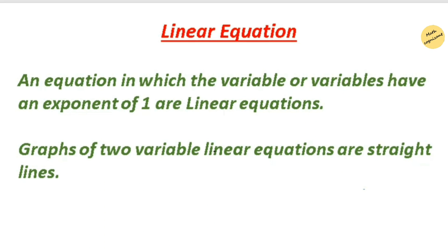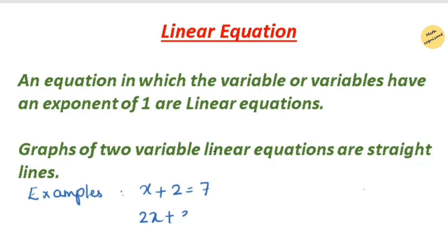Welcome to Math Cognizant. This video is a discussion about linear equations. A linear equation is one in which the variable or variables have an exponent of 1 — that means the degree should be 1. Such equations are called linear equations, and their graphs are always a straight line. For example, x plus 2 equals 7 is a linear equation with variable x having a power of 1.